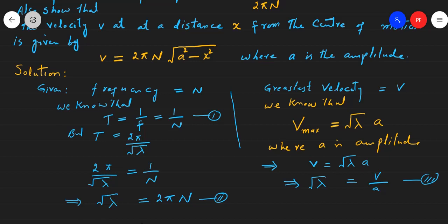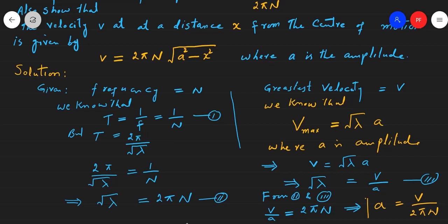Agar hum equation 2 aur equation 3 ko compare karein, from equations 2 and 3: 2πn = v over a. Aur yahan se agar hum amplitude a ki value calculate kar lein, to woh equal hogi v over 2πn. Aur yahi humne calculate karna tha — ke amplitude is ke barabar hai.